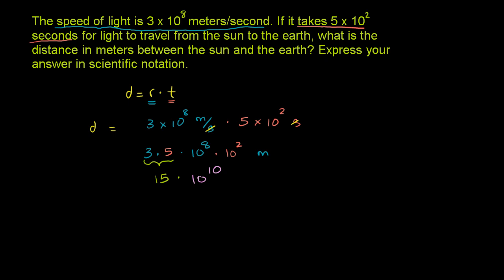Now you might say, hey, I'm done. That is the distance. And that looks like scientific notation. I have some number times some power of 10. But remember, if you really want to be formal about your scientific notation, this number right here has to be less than 10. The way I've written it right now, it is clearly not less than 10. So how can we rewrite it?